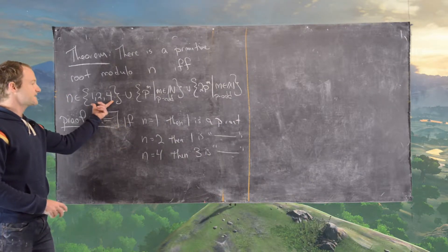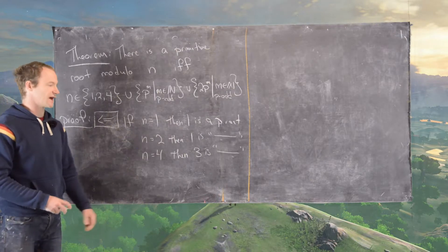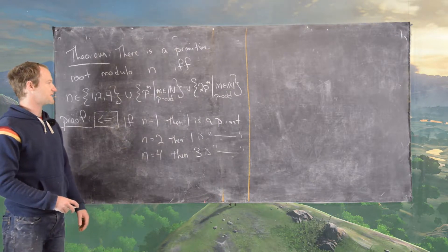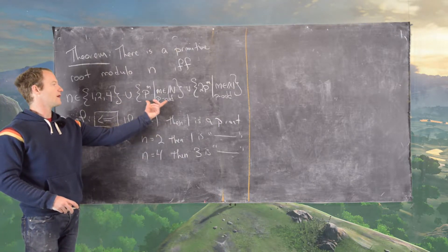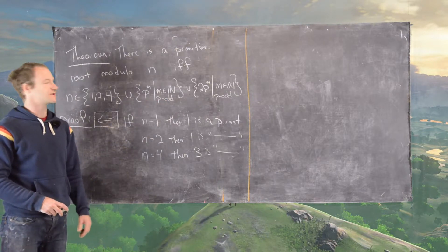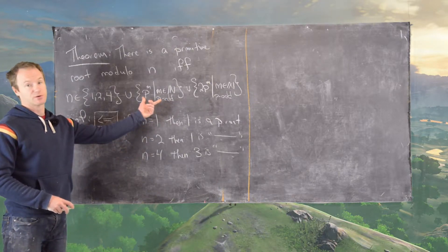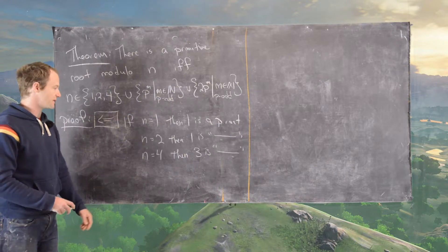And so if we're in this set, then we have a primitive root just by checking one case at a time. And then if we are in this set, there's a previous result that we just proved that shows that we have a primitive root.